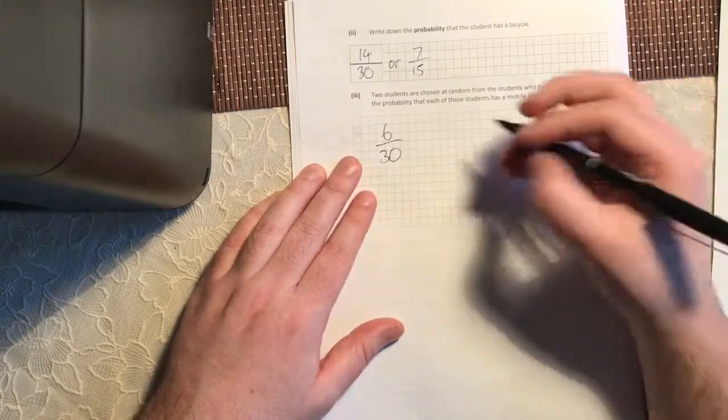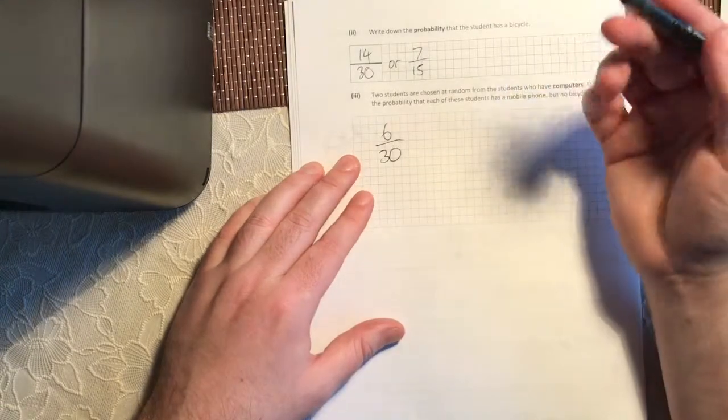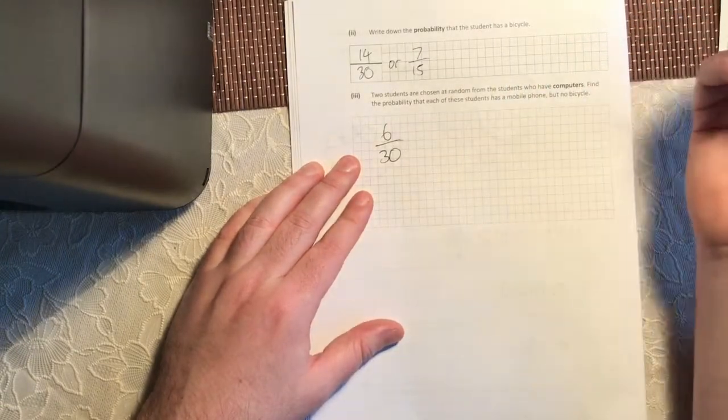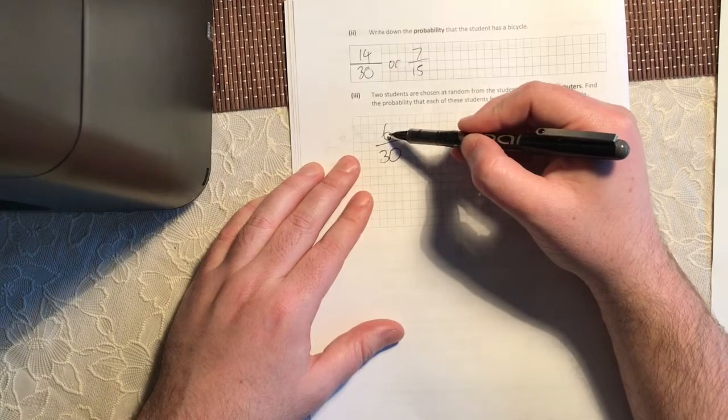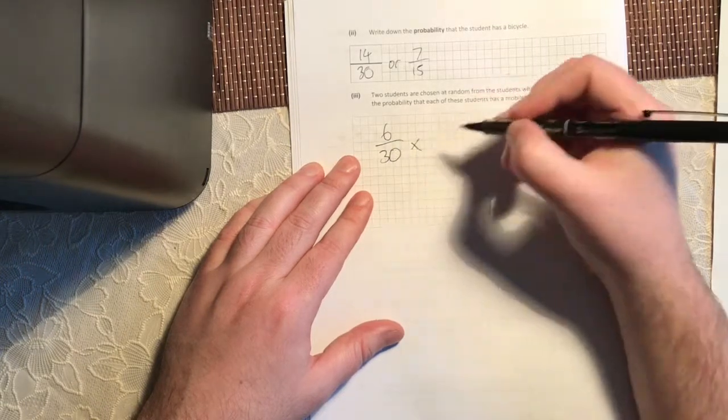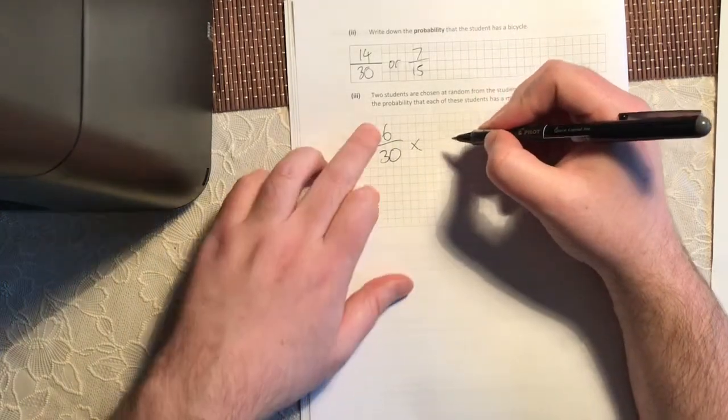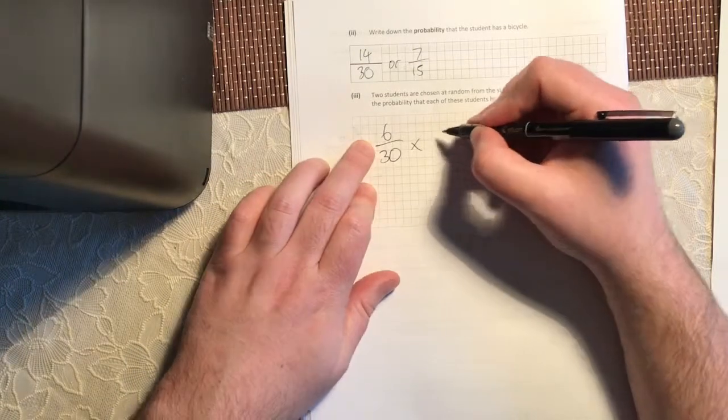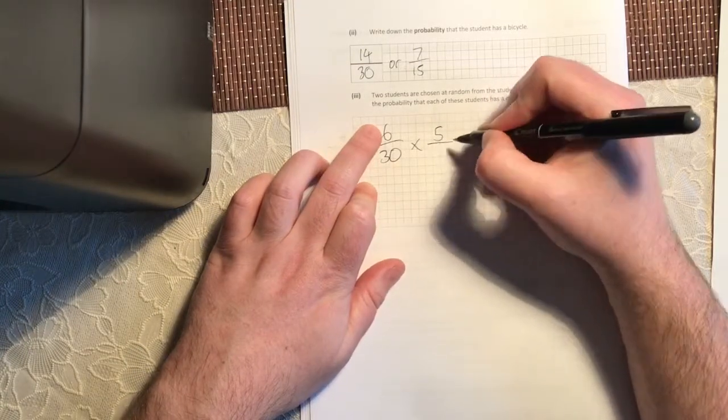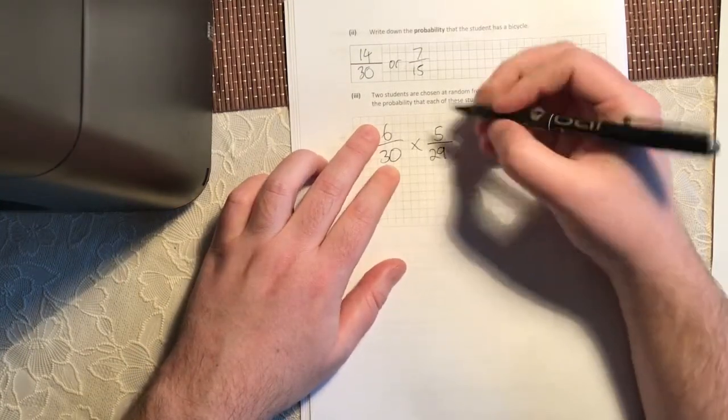Now I have to pick a second person. Now in probability, there's always this confusing thing where 'and' actually means multiply. So you're picking one student. My probability is 6 out of 30. And you're picking a second student. But because I've picked one from this group already, I'm now down to 5 out of 29.